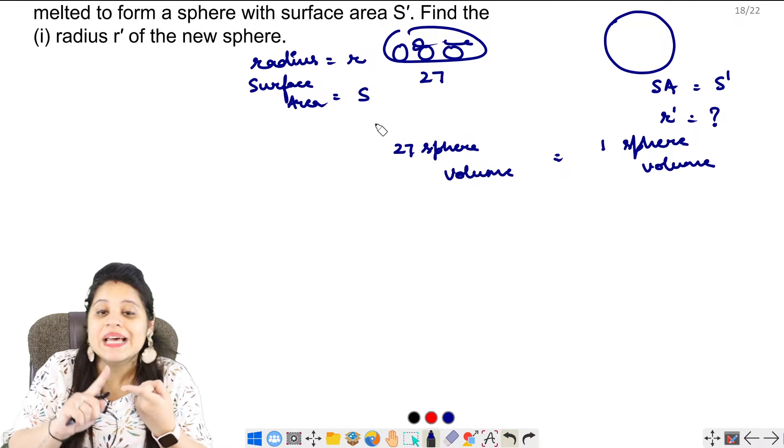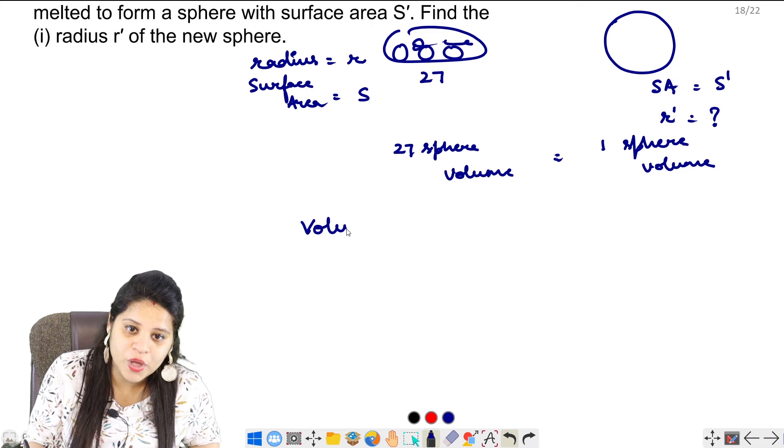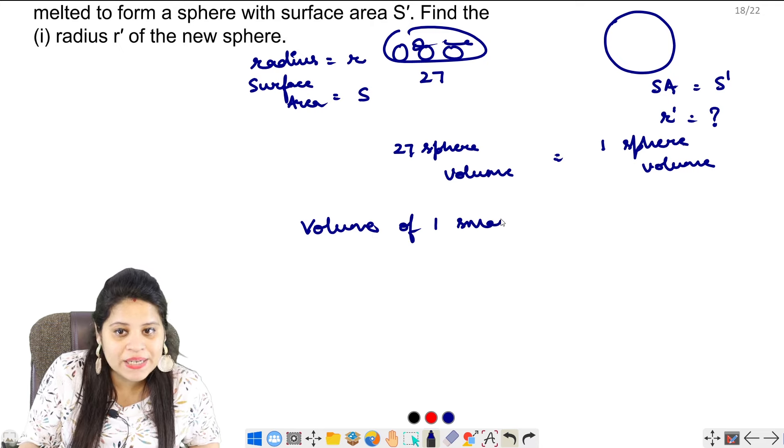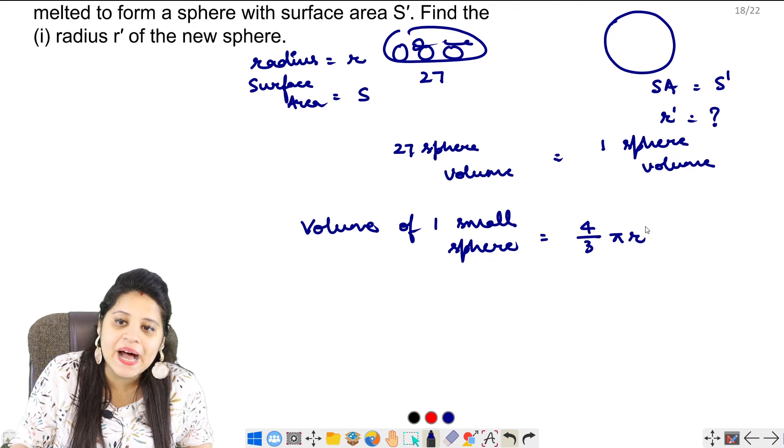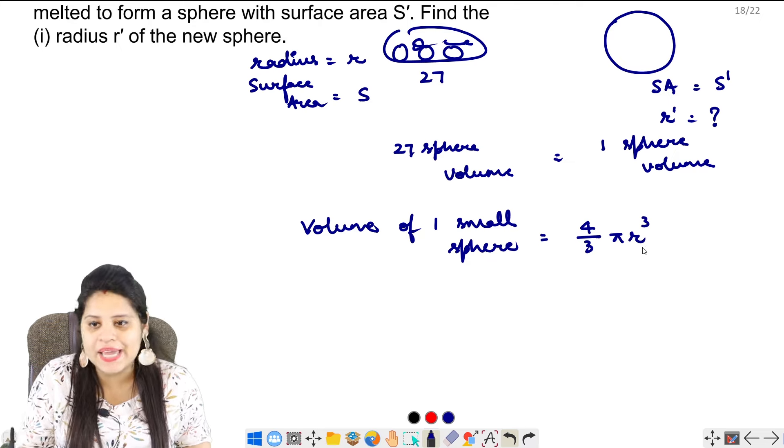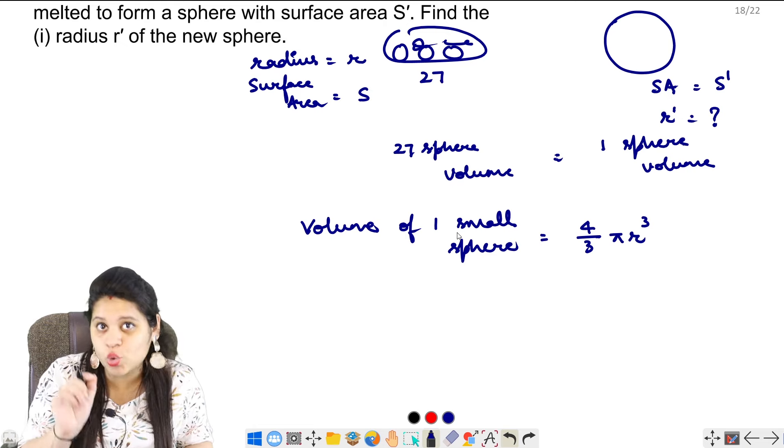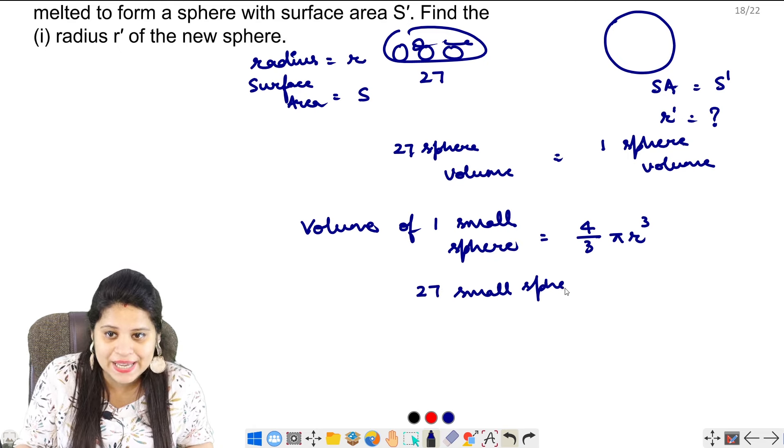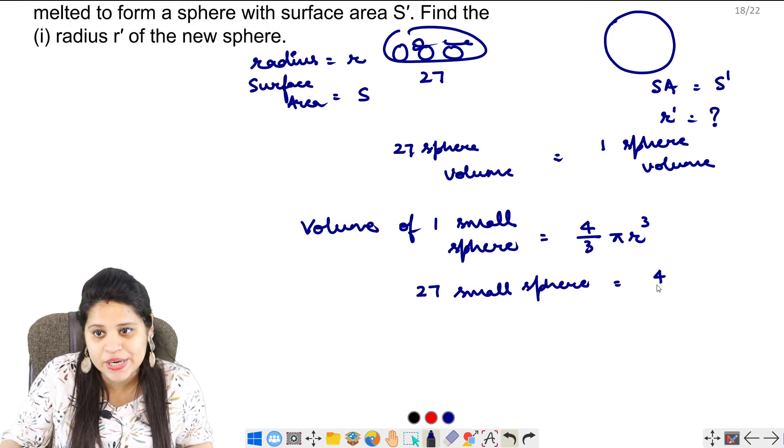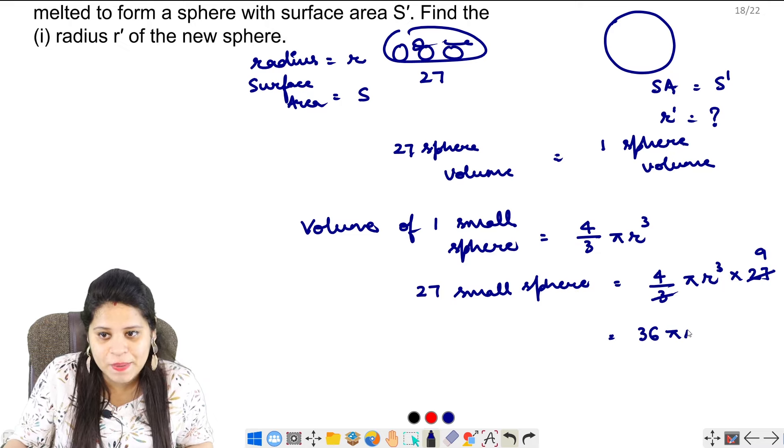First of all, there are no values here, only R, S, S dash, and R dash are represented. If I take the volume of one small sphere, it's 4 upon 3 pi r cube. Now, we have 27 small spheres that have melted. So, if it's 1, we multiply it by 27. When I simplify, this is 36 pi r cube.